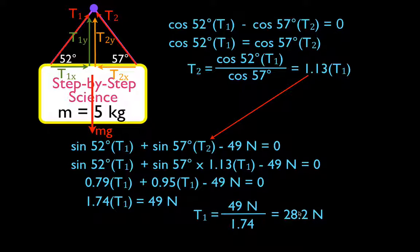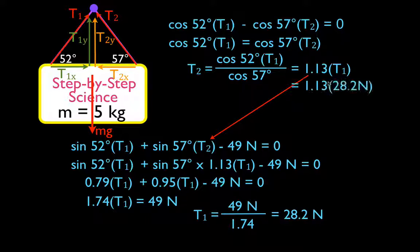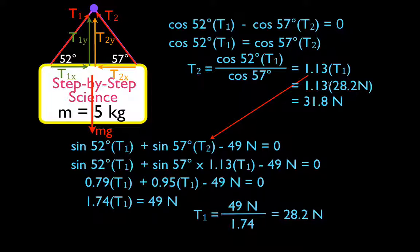Now how do we solve for T2? We already found that T2 equals 1.13 times T1. Since we now know T1, we simply substitute it in and get that T2 is 31.8 newtons. So we solved for both tensions. We drew the forces in, added up the forces, substituted our trig expressions, and solved for T1 and T2. If you follow those steps, it's pretty straightforward.